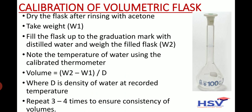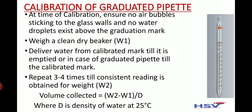Note the temperature of water using the calibrated thermometer. Volume = (Weight 2 − Weight 1) / d, where d is the density of water at the recorded temperature. Repeat three to four times to ensure consistency of volumes.